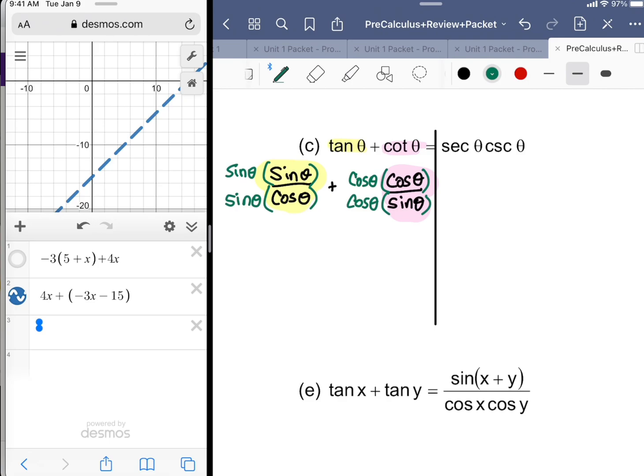Simplifying, we'd have sine squared theta over sine theta cosine theta. When you're verifying identities, hopefully you remember from last year, you can't skip any steps. If you do, you're not providing what we call a rigorous proof.